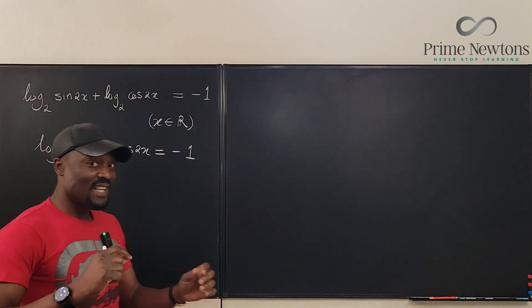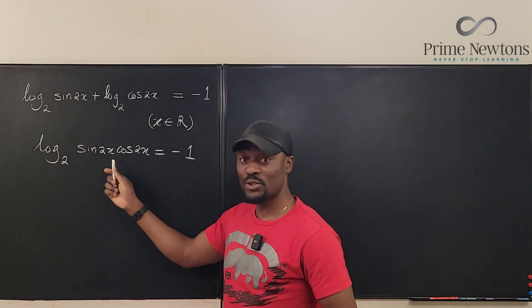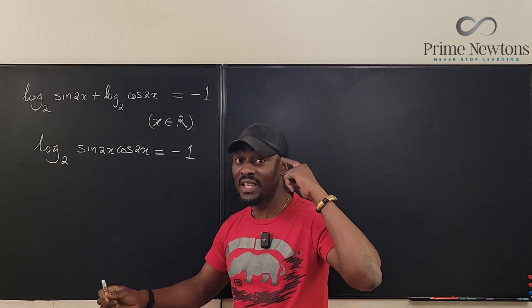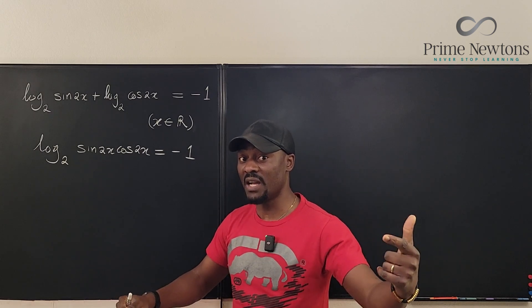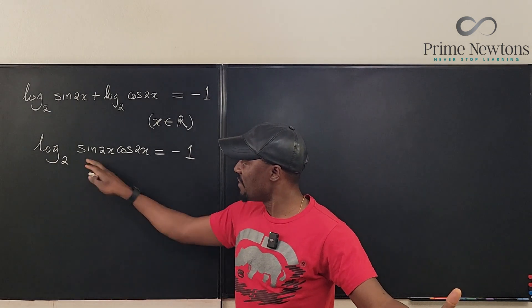Now whenever sine multiplies cosine and you have the same argument and you're solving an equation, you should start thinking of the double angle formula for sine. That's what I'm already seeing.